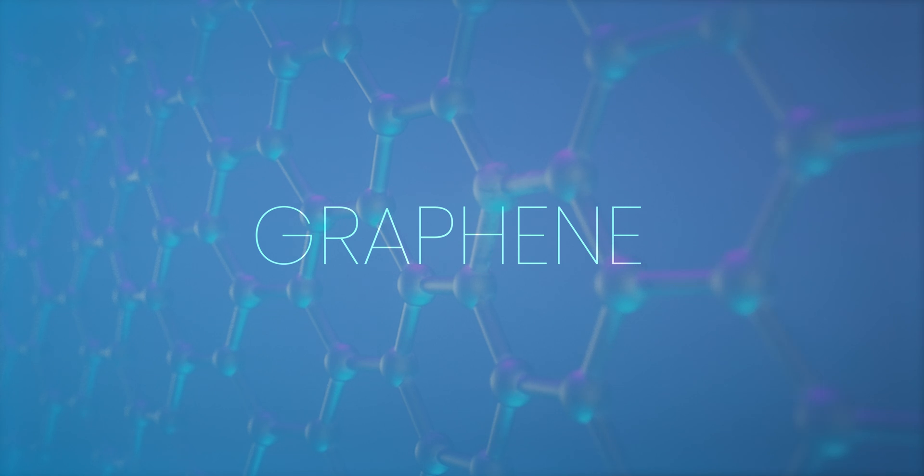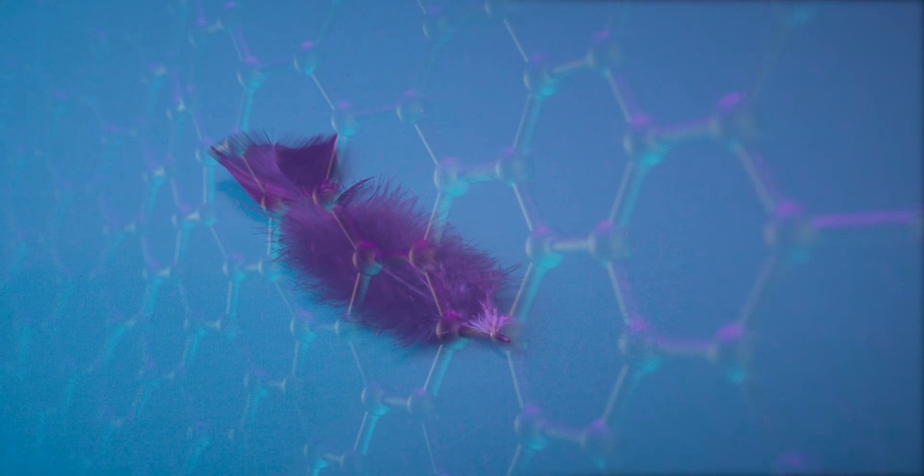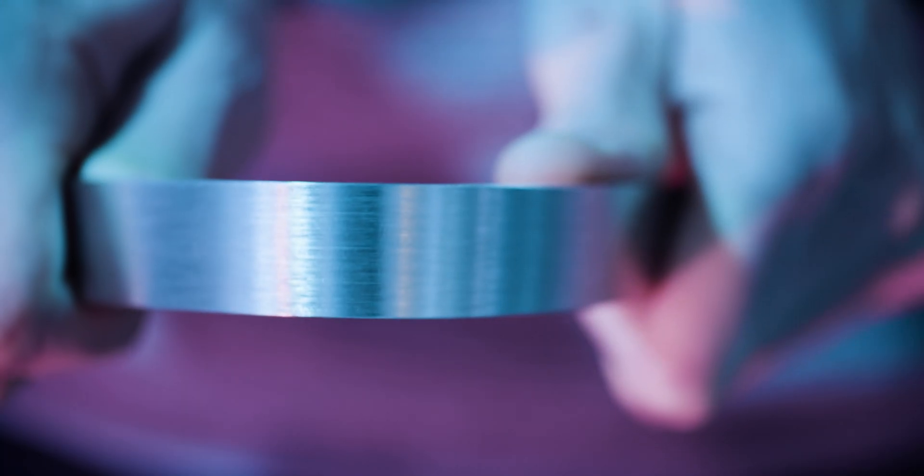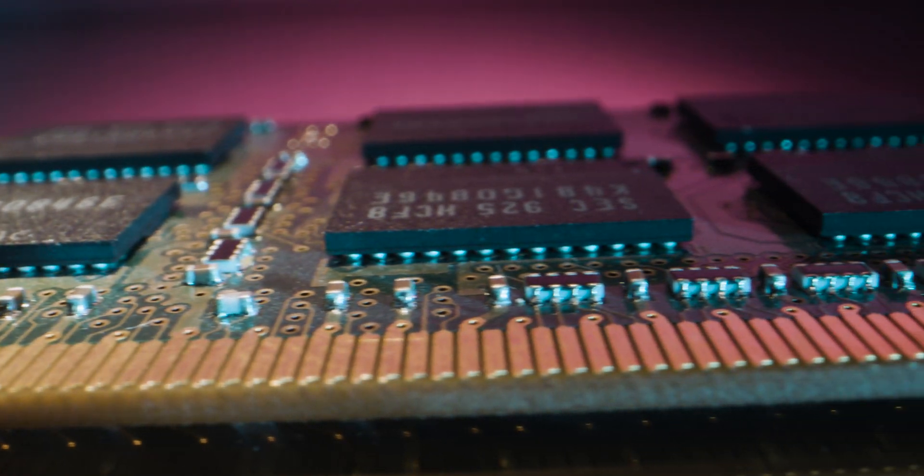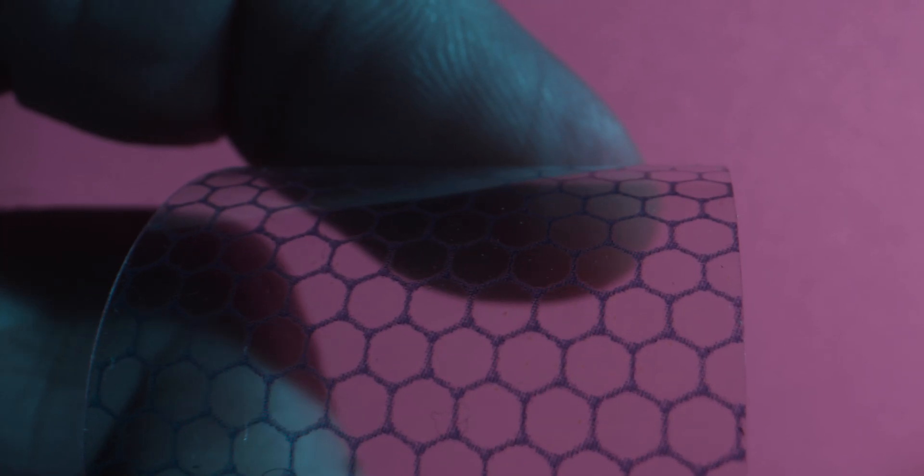Graphene, a two-dimensional material that's lighter than a feather, much stronger than steel, more conductive than copper and as flexible as it gets.